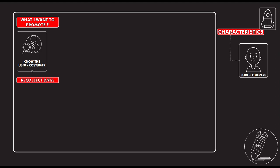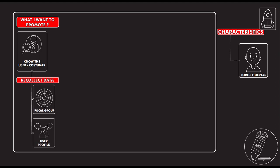After that, I need to know who the user or customer is, so I need to collect data on this topic. The first thing to do is make a focal group — if you don't know how, please check our channel because we have a tutorial on how to make a proper focal group. After you have the main information, you can develop a specific user profile. If you don't know how to make a user profile, we also have a tutorial on our channel. That is very important.